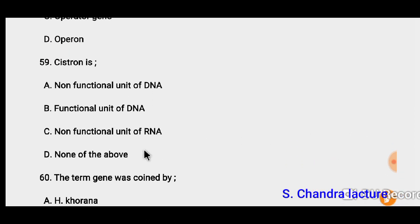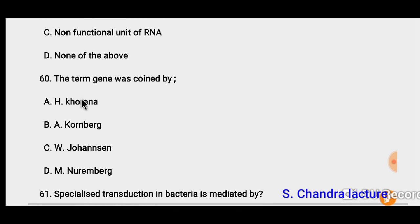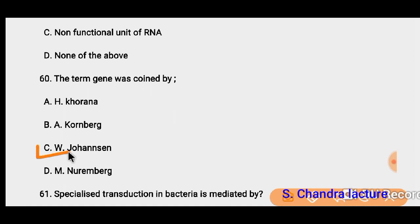Question 59: Cistron is the functional unit of DNA. So cistron is what we call the functional unit of DNA. Question 60: The term 'gene' was coined by W. Johansson.